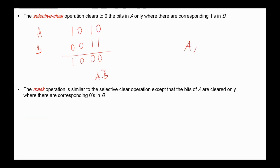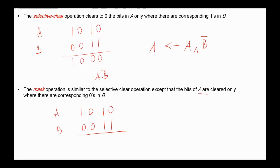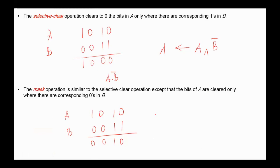Next, the mask operation. The mask operation is similar to the selective clear operation, except that the bits of A are cleared only where there are corresponding zeros in B. Again, with the same example A is 1010 and B is 0011, we clear bits in A where we have zeros in B. The remaining bits in A are not changed, and from this table it is easy to find out that the mask operation is just an AND operation.